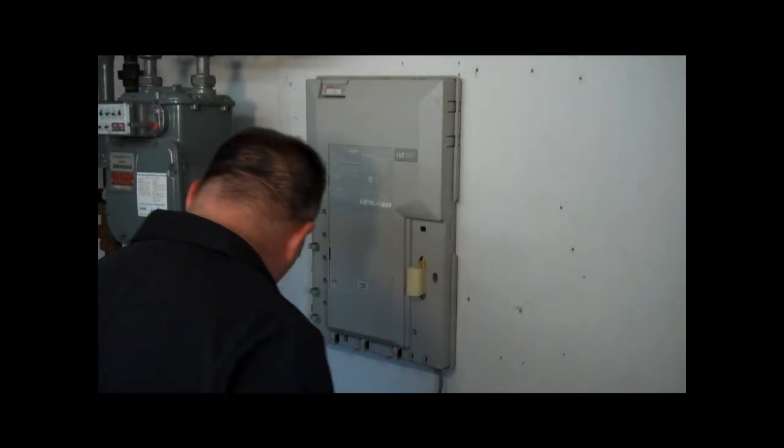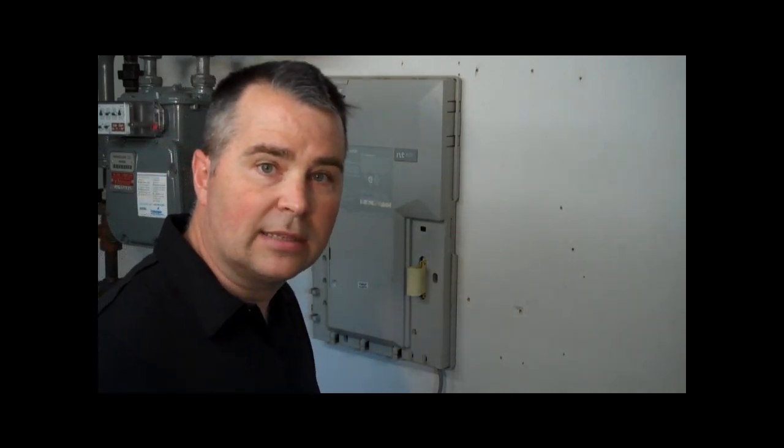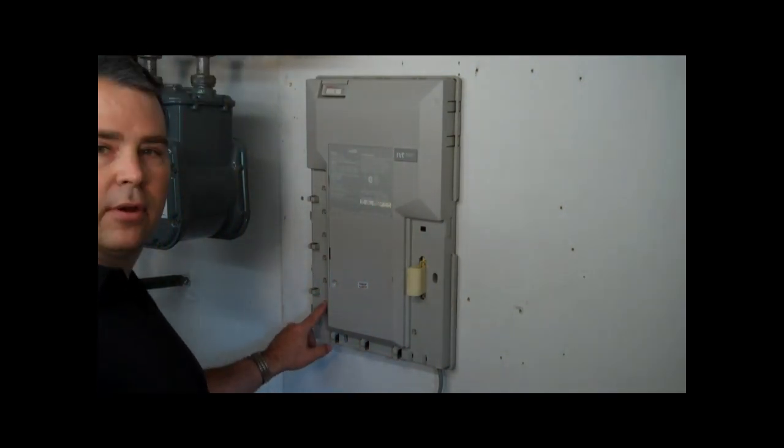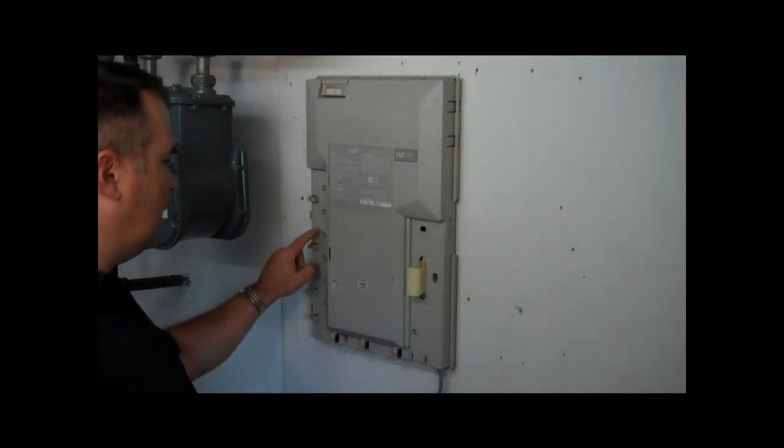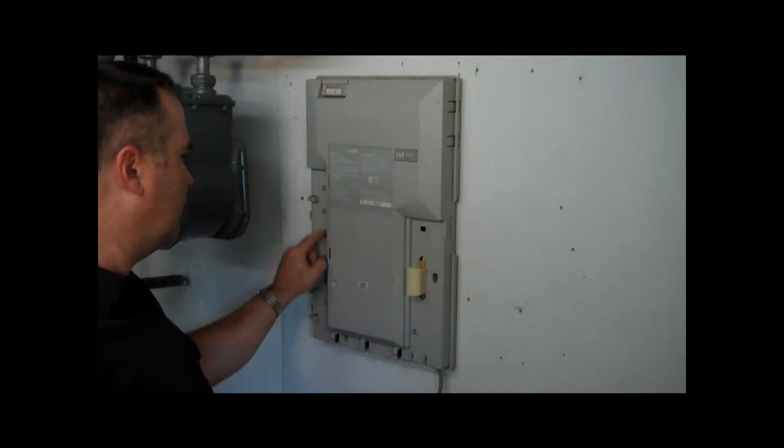There's two things that need to be connected. The first one is the voice lines or the POTS lines, the phone service, and those go over here. They're one, two, three, four, five, six. You don't have to use all six, but there's a capacity for six lines.